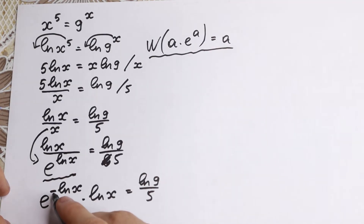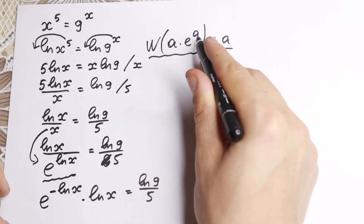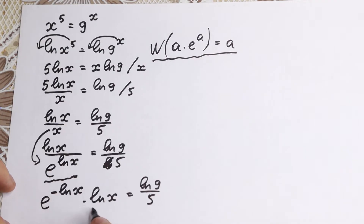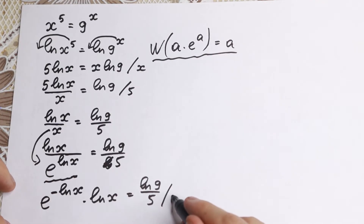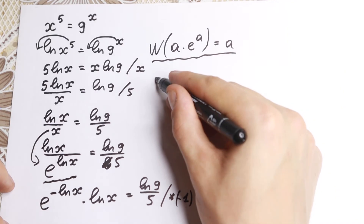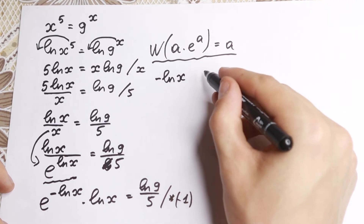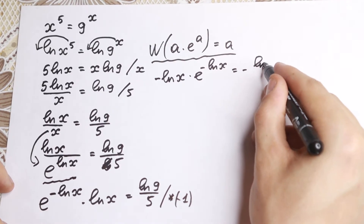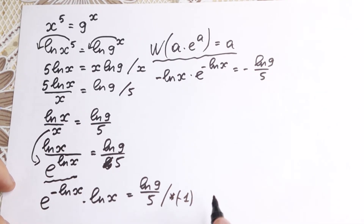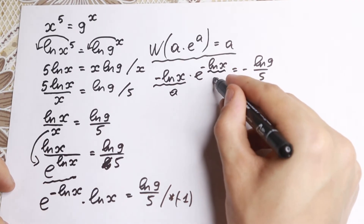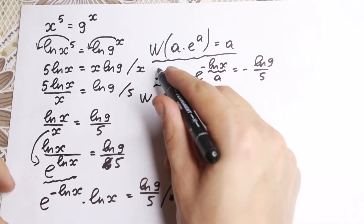Looking at our problem, we have e to the power of minus natural log x. So it looks like our a — but a here should equal minus natural log x, not positive natural log x. So let's multiply both sides by minus 1. We then write: minus natural log x, times e to the power of minus natural log x, equal to minus natural log 9 over 5. Now this is exactly our a times e to the power a pattern, so we can apply the Lambert W function.